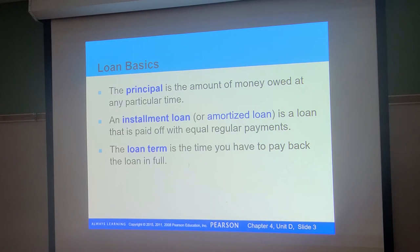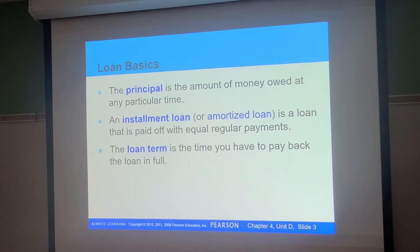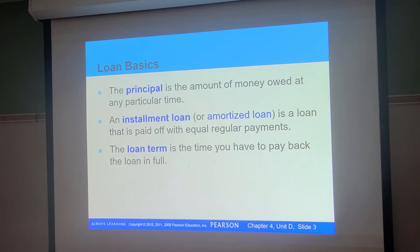The principal in this case is the money that you owe, since we're talking about loans, mortgages, and credit cards — not investments. An installment loan, also called an amortized loan like a mortgage, is a loan paid off with equal regular payments over the time period. On a car or mortgage you'll have installment loans where you pay a specific amount every single month for a fixed number of years. The loan term is the number of years or months until you pay back the loan in full.